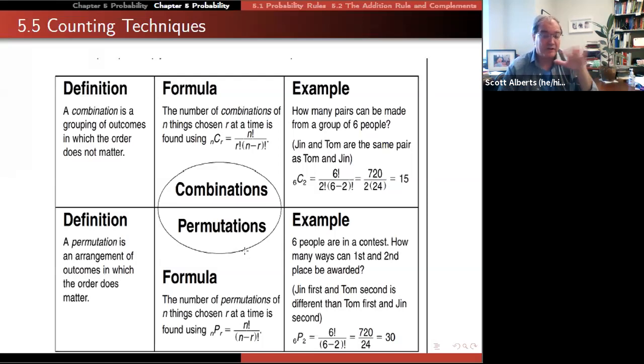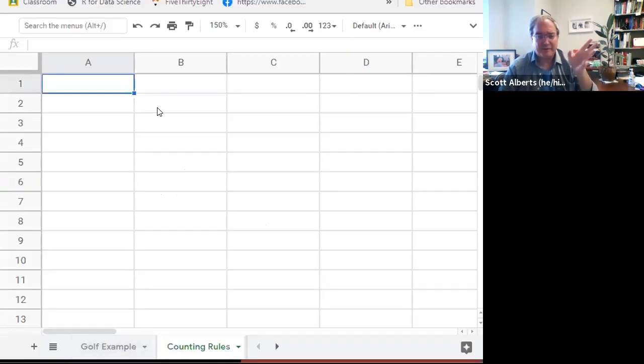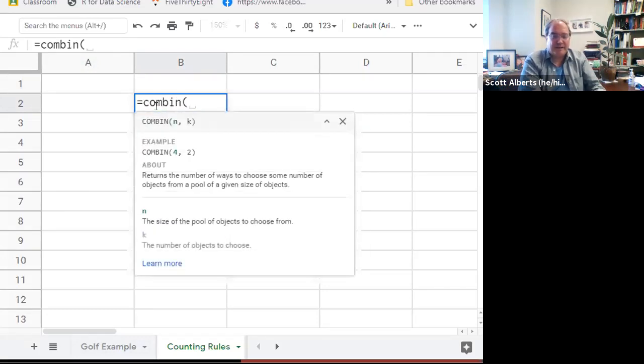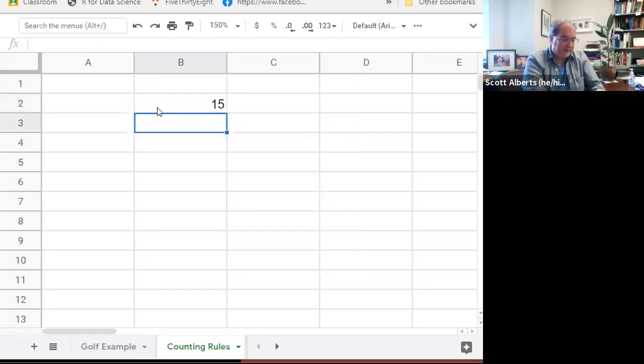Again, permutations aren't as common in statistics, but they're a lot easier to calculate. In practice, whenever I'm going to do those, I'm going to always do them in a spreadsheet. Now, you could go to StatCrunch, but actually StatCrunch is a little bit trickier for that. But if we do combination, Combin 6, 2, that gives us our 15 just like we had in the example.